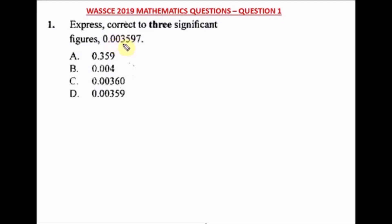We have a zero — non-value — another zero — non-value — now we have a three, so we start counting from here. We have one, two, three. Immediately after the third number, we ask: is the next number greater than five, less than five, or equal to five? If it is greater than or equal to five, we approximate by adding one.